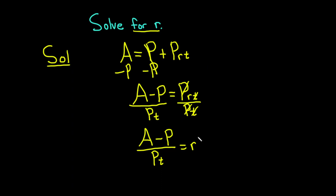However, most people don't leave their answers like this because it's kind of weird. People usually put the R on the left-hand side. So the final answer will be little r equals A minus P over PT. And that would be the solution to this problem.